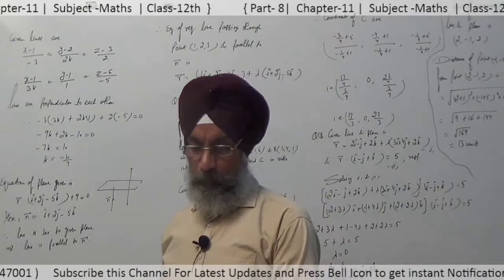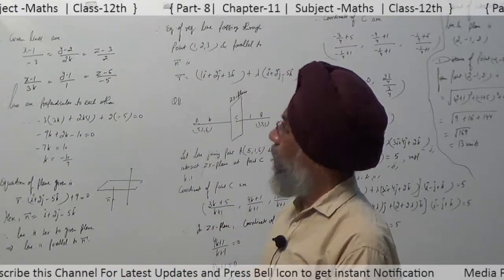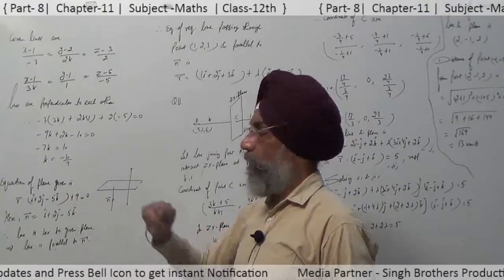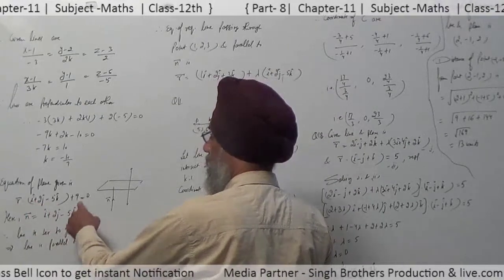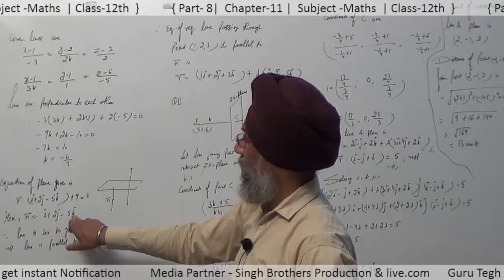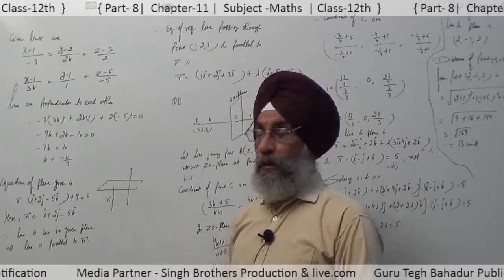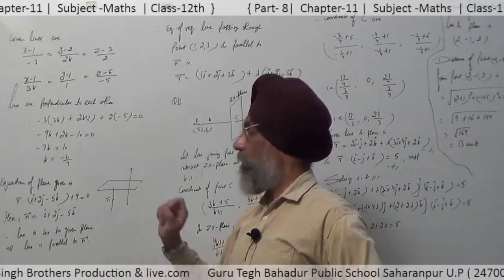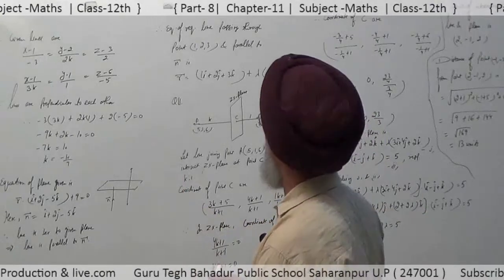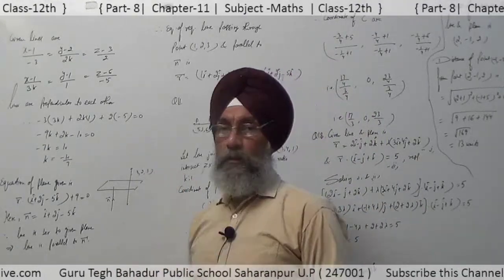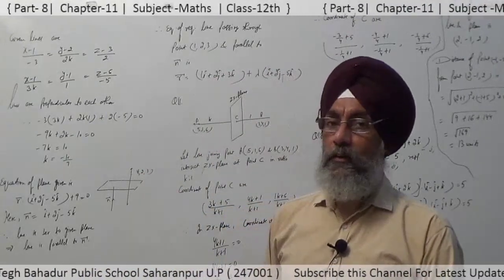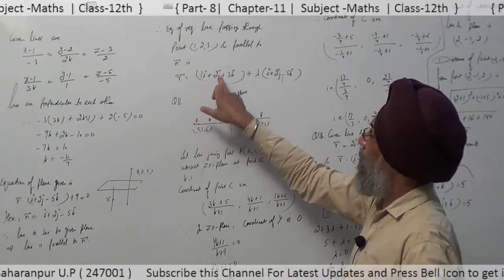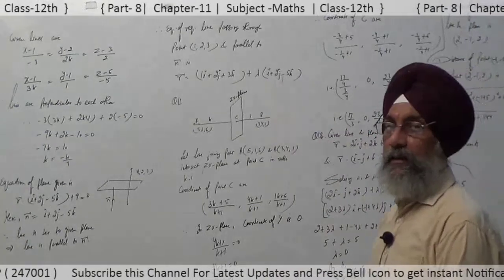Question number 7: find the equation of the plane passing through (0, 1, 2, 3) and perpendicular to the plane r⃗ · (i + 2j - 5k) + 9 = 0. This is of the form r⃗ · n⃗ = d, where n⃗ = i + 2j - 5k is the normal vector. Since the line is perpendicular to the plane, its normal vector is parallel to this line. Passing through point (1, 2, 3), the required equation is r⃗ = (i + 2j + 2k) + λ(i + 2j - 5k).